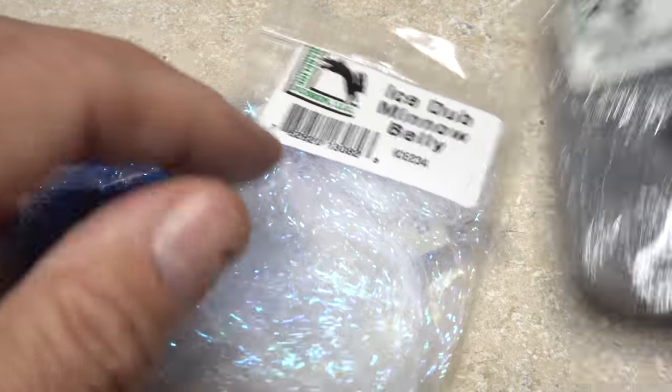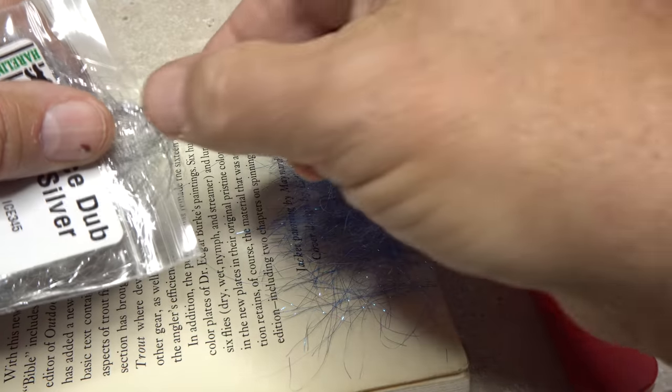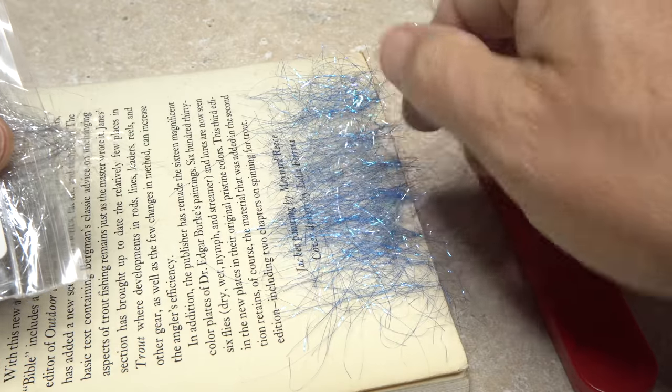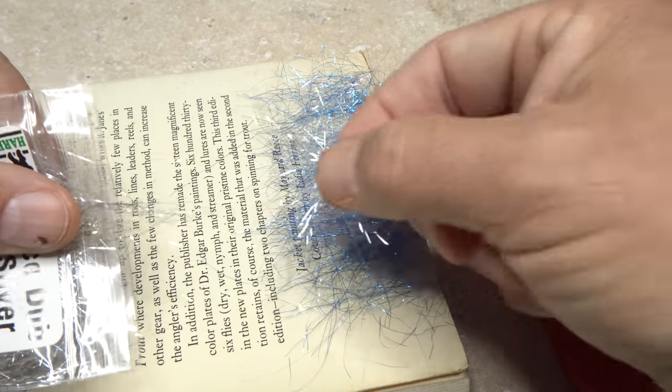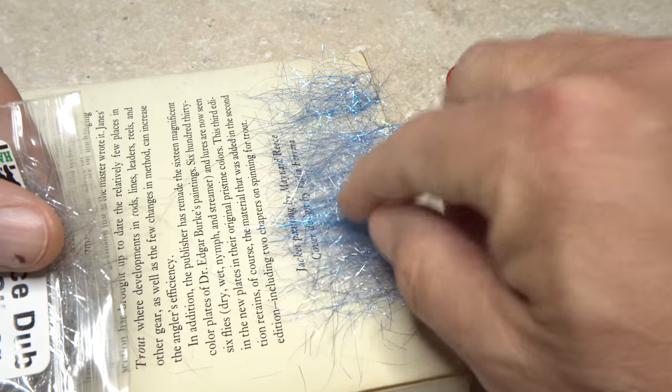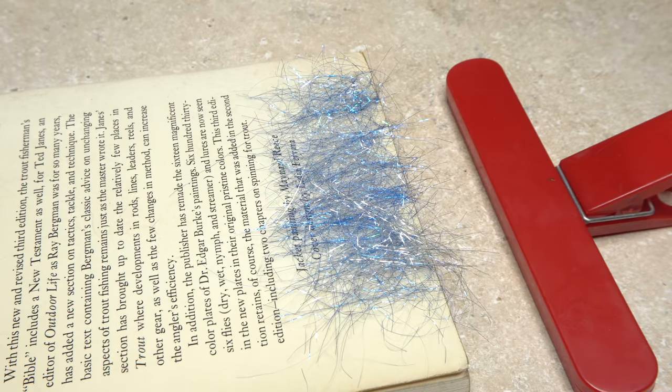I then grab the silver ice dub and start placing it about halfway down the strip and increase the amount slightly as I work down to the bottom of it. The whole color combination and amount is really up to you, the tyer.